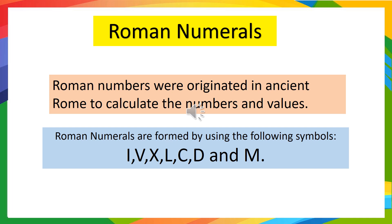Roman numbers were originated in Rome to calculate the numbers and values. We use seven symbols in the Roman numerals, i.e., I, V, X, L, C, D and M.